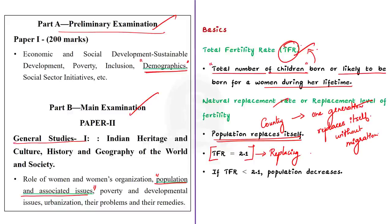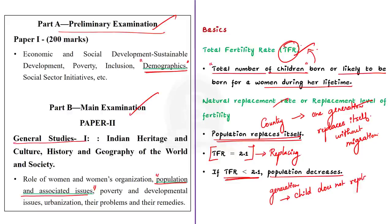You should know what happens when the TFR falls below 2.1. When TFR falls below 2.1, a particular generation is not producing enough children to replace itself. Since couples are having fewer children, there are fewer children to replace their parents, and when this happens, the population of the country starts falling.